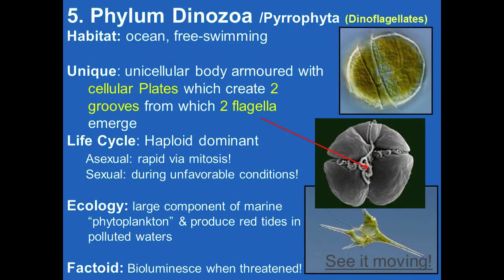Our last algae phylum is Dinozoa, or Pyrrophyta — the dinoflagellates. Found in the ocean and typically free-swimming. They're unique because they have a unicellular body armored with cellular plates, creating two grooves from which two flagella emerge. Their life cycle is haploid dominant, with both asexual (very fast via mitosis) and sexual reproduction (only during unfavorable conditions). Ecologically, they're a large component of marine phytoplankton and produce red tides in polluted waters — a serious problem off the coast of Los Angeles. They also bioluminesce when threatened; swimming in Southern California waters at night, you can see the water sparkle, especially during a new moon.